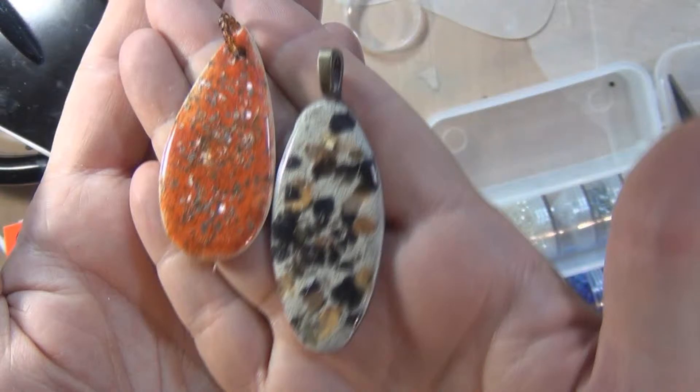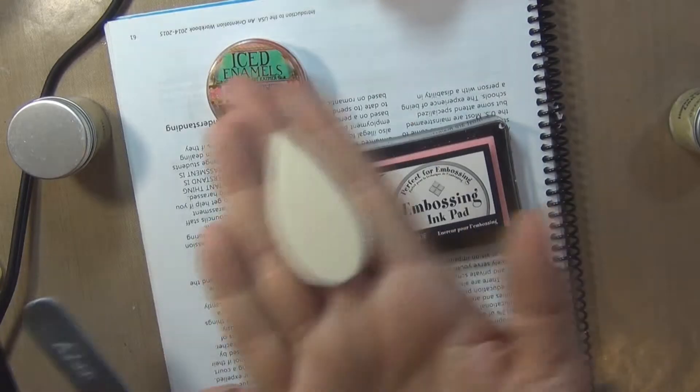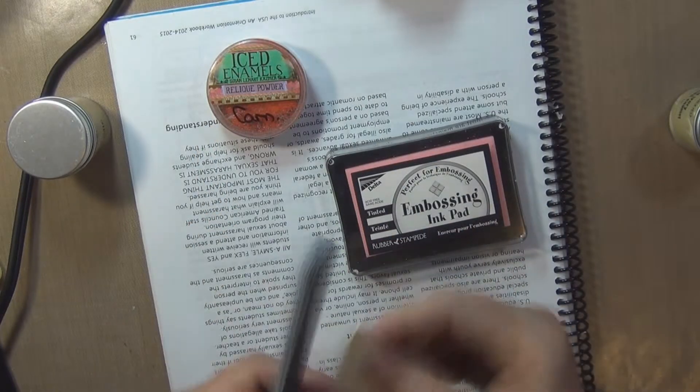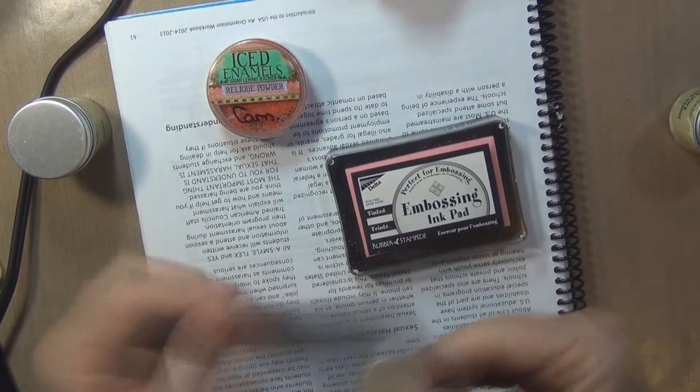Hi guys, it's Weedit. I want to show you how to make these two pendants from embossing powder. I know embossing powder has been done, this is just my take on it.